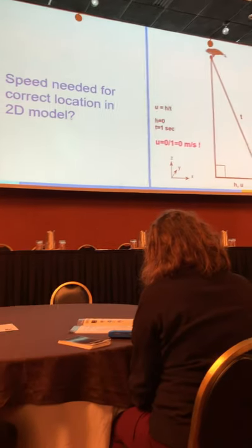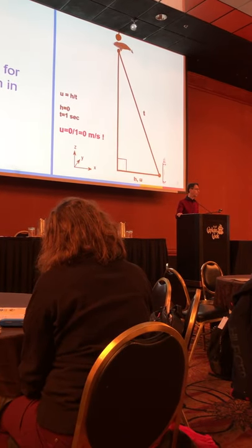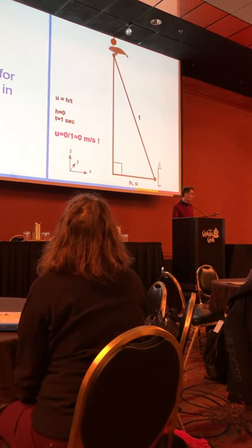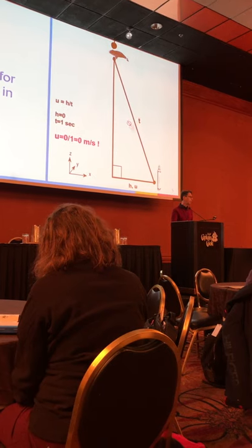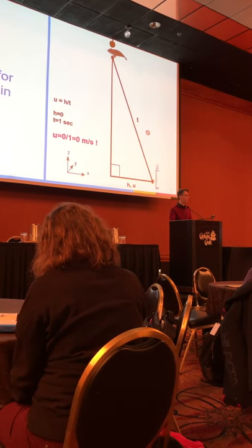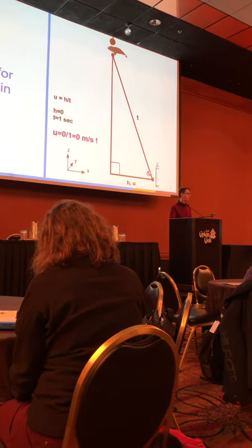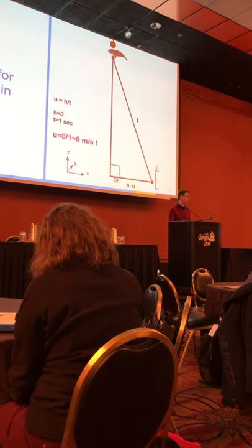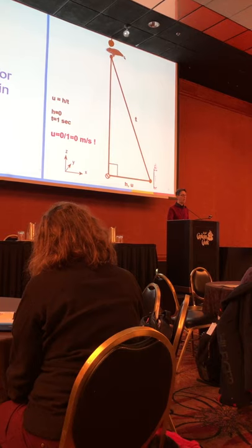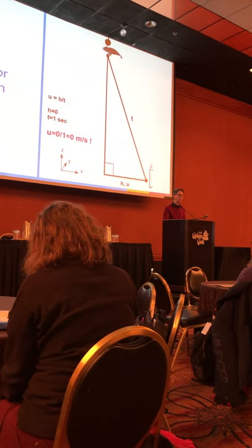What's wrong with 2D models? What I'm going to tell you now is extremely simple, but as far as I can tell it has been unrecognized for the last 140 years. Suppose you have a whale sitting up here, maybe a kilometer above a receiver down on the ocean floor, and the time it takes the whale sound to travel from there to the receiver is T. In a two-dimensional model, you're computing the location down in the plane where the receiver is. What is the right speed to use in a two-dimensional model to get the true location of the whale? You get a surprising answer.